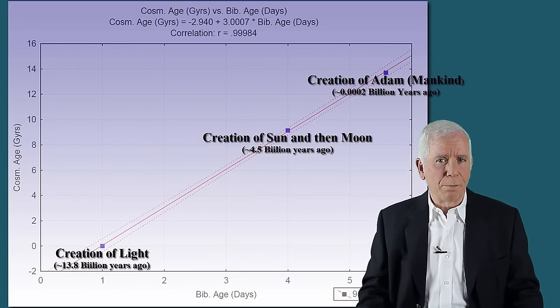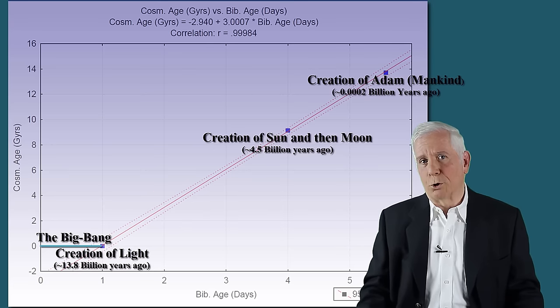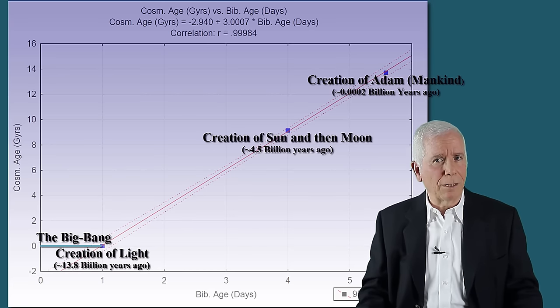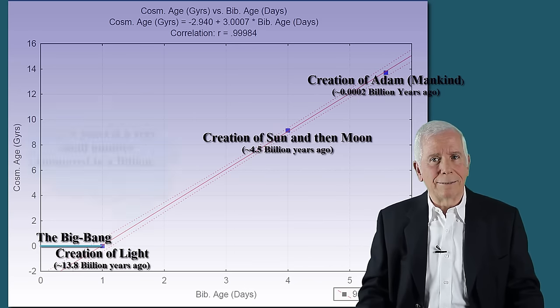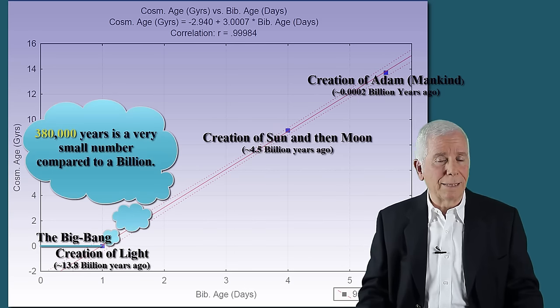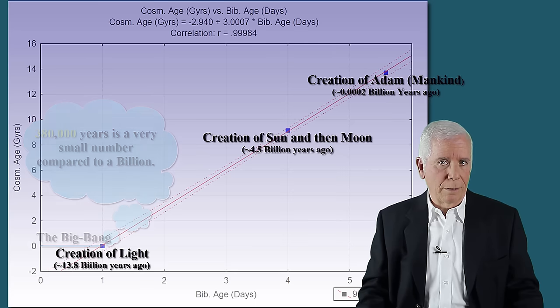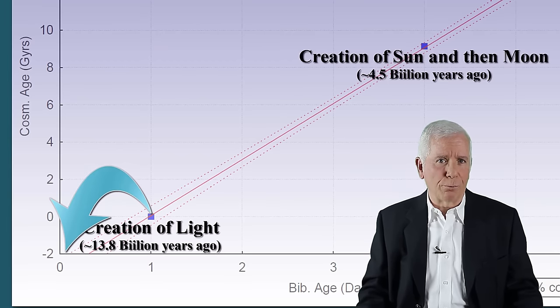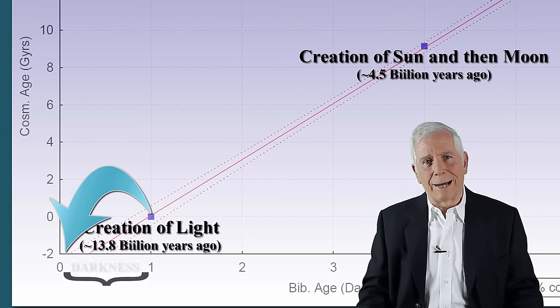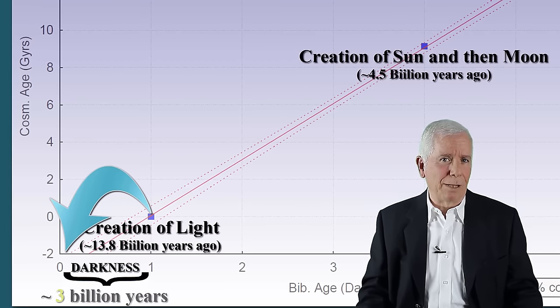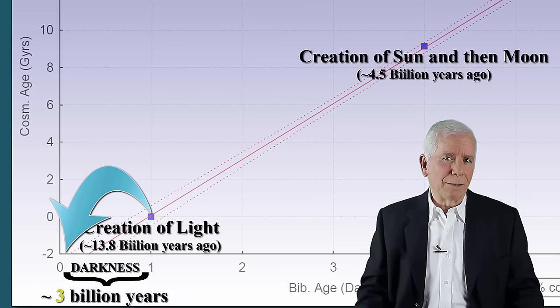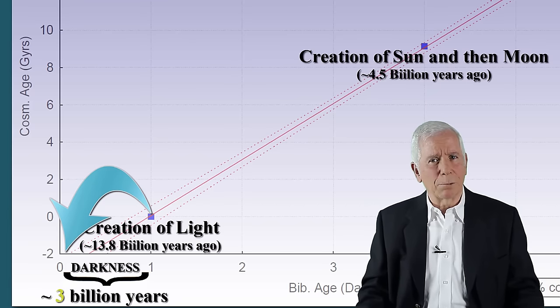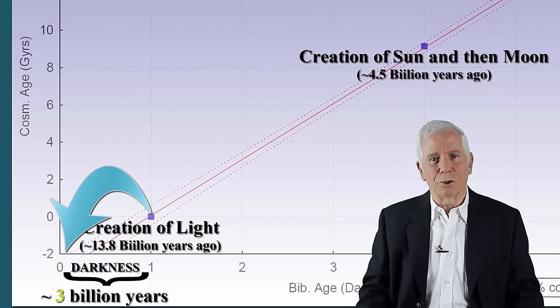That is, before creation of light, which, according to modern science, occurred immediately after the Big Bang, more precisely, 380,000 years after the Big Bang. The statistical model predicts that before creation of light, there was a period of darkness that lasted about 3 billion years. This is compatible with that specified explicitly in Genesis creation story.